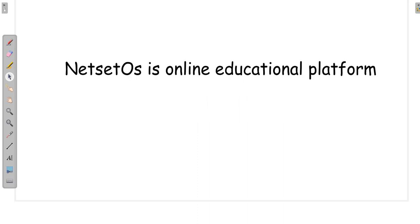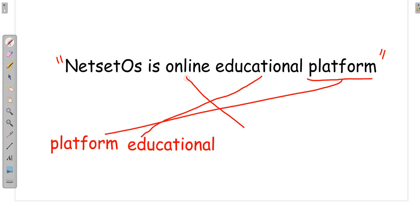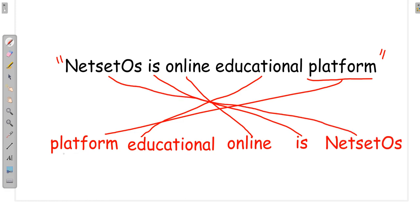For example, if we have the string 'Netset OS is an online educational platform', and if we have to reverse this sentence, the last word will arrive first, then 'educational', followed by 'online', then 'is', and the first word will arrive at last. So we get: 'platform educational online is Netset OS'.